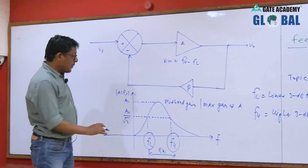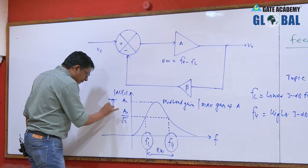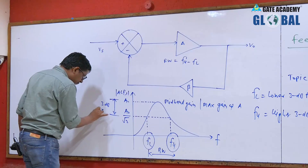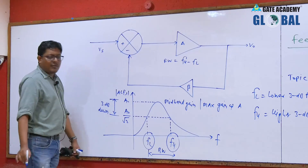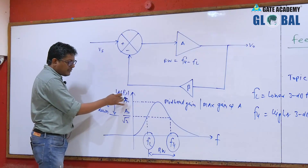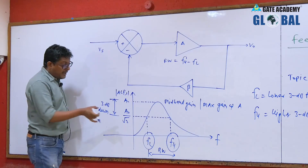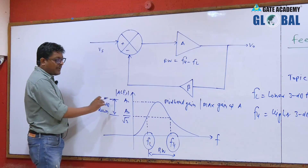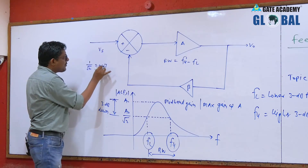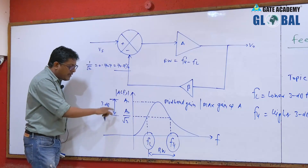The cutoff frequencies of two filters — low pass filter as well as high pass filter. A naught is the mid-band gain. Why is this frequency referred as 3dB frequency? Because this is the 3dB down. The definition of any 3dB frequency: the frequency at which gain will be 70.7%, or 1 by root 2 times of its mid-band value.